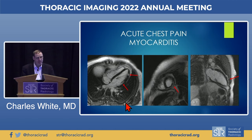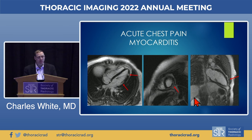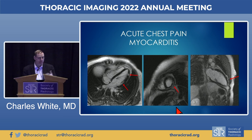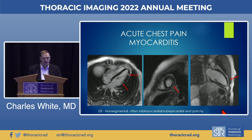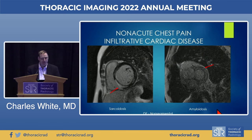If the patient, often younger, has chest pain that is patchier and mid-myocardial on the delayed image rather than subendocardial, you would think of myocarditis — symptoms mimic MI, but this technique is better than any other for making that diagnosis. It's non-segmental. If the patient has non-acute chest pain with a non-ischemic appearance, you think of infiltrative disease, with sarcoidosis and amyloidosis being two of the most common examples.